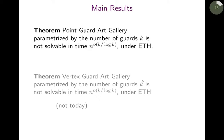Okay, so let me go on to our result. We can prove for the point guard Art Gallery Problem that if you parameterize by the number of guards, so you want to know can I guard you with k guards, then this is not solvable in time n to the o of k divided by log k under the exponential time hypothesis. We have the same result for the vertex guard Art Gallery variant, but I will not present it here.